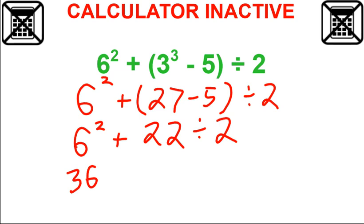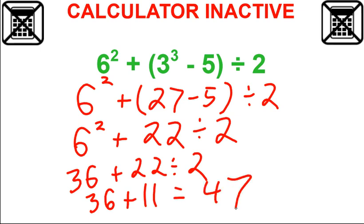Then we still have our plus 22 divided by two. This is the part sometimes where people mess up. The division has to get done before the addition. So we got 36. 22 divided by two is 11. So then when we add, it gives us 47.